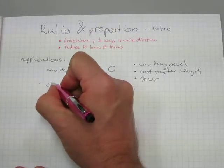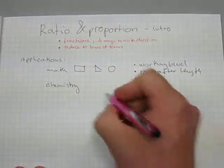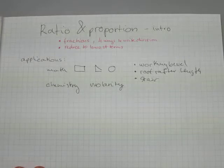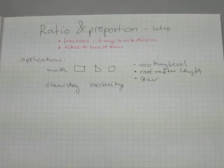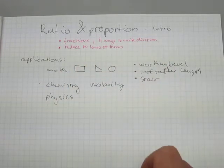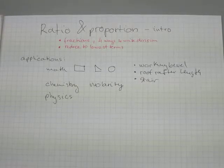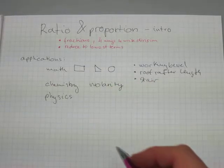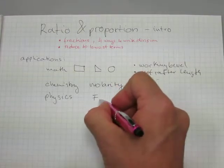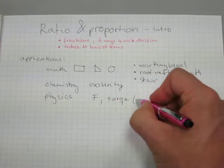Another area in science is chemistry, where molarity calculations and a great many calculations are done using ratio and proportion. In physics, an area where ratio and proportion is used often involves mechanics, including force, torque (also known as moment).